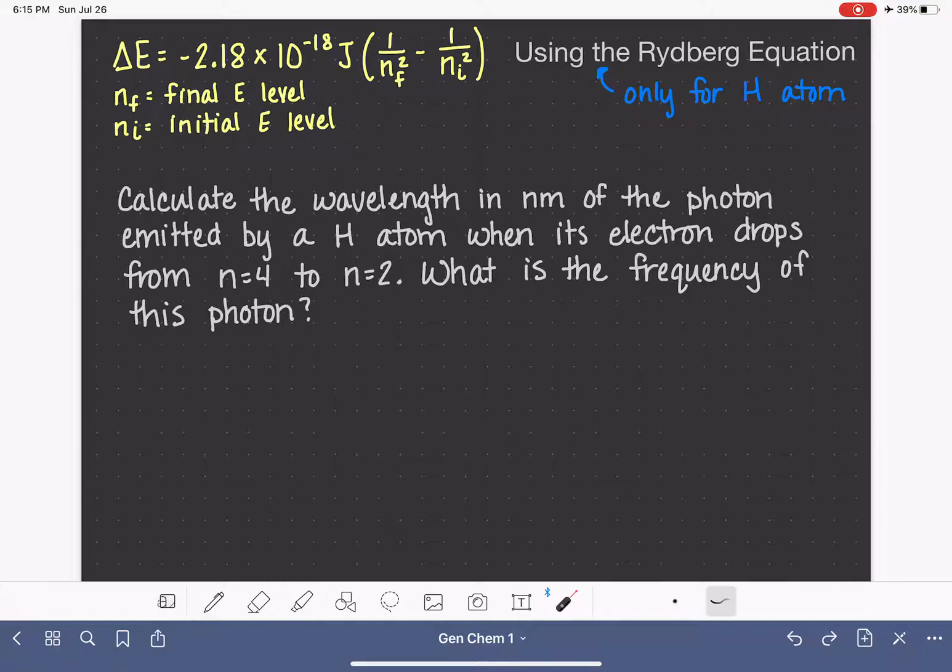And with the Rydberg equation, we do have three variables. We have the change in energy, we have the final energy level, and we have the initial energy level. You have to be provided with two of those three variables. In this particular problem, we're being provided with the two energy levels, and we're going to use that to calculate delta E.